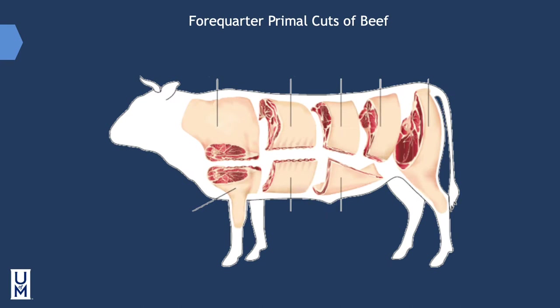The forequarter consists of four primal cuts: the chuck, the brisket and shank, the rib, and the short plate. The forequarter represents approximately 55% of the carcass weight. The chuck is the animal's shoulder, accounting for approximately 28% of carcass weight. It contains a portion of the backbone, five rib bones, and portions of the blade and arm bones. Because an animal consistently uses its shoulder muscles, chuck contains a high percentage of connective material and is quite tough, though it is one of the most flavorful and least costly cuts. The primal chuck is difficult to cut or carve if cooked whole because of the large number of bones and small muscle groups that travel in different directions.